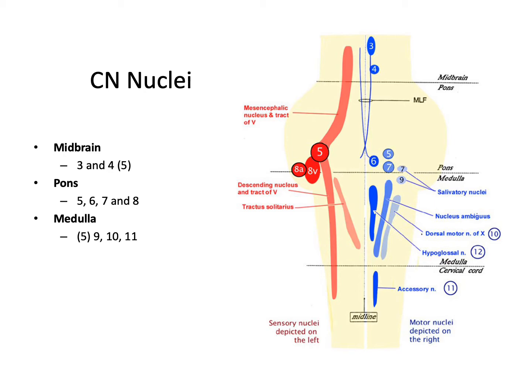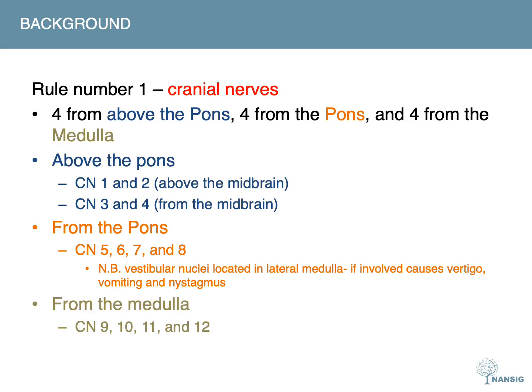Rule number one relates to the cranial nerves. There are four that arise from above the pons, four from the pons, and four from the medulla. Those from above the pons are cranial nerves one and two — from above the midbrain — and three and four from the midbrain itself. From the pons: five, six, seven, and eight. Also note that the vestibular nucleus is located in the lateral medulla, so damage there can cause similar symptoms to damage of the vestibulocochlear nerve.